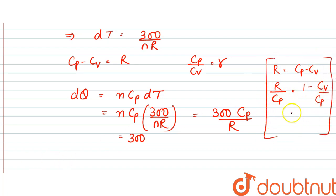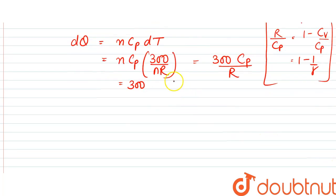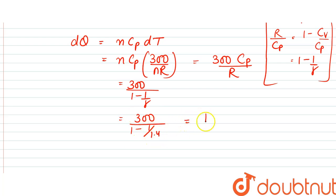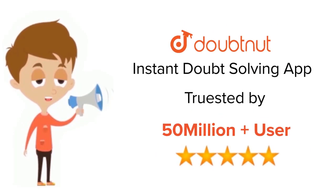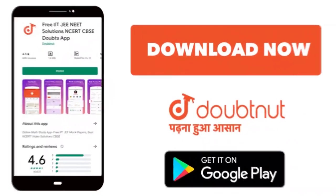From here this would be equal to 1 minus 1 by gamma. So this would be equal to 300 divided by 1 minus 1 by gamma, which is equal to 300 divided by 1 minus 1 by 1.4, which is equal to 1050 joules approximately. So this is the answer. Thank you. For class 6 to 12, IIT-JEE and NEET level, trusted by more than 5 crore students, download Doubtnut today.